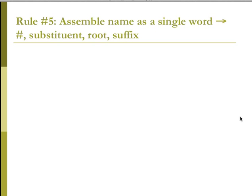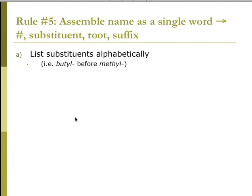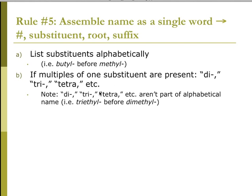Rule 5: assemble the name as a single word — number, substituent, root, then any suffixes. List substituents alphabetically, meaning butyl comes before methyl. When multiples are present, use di-, tri-, tetra-. These prefixes are not part of the alphabetical ordering — for instance, triethyl still comes before dimethyl, because ethyl comes before methyl.